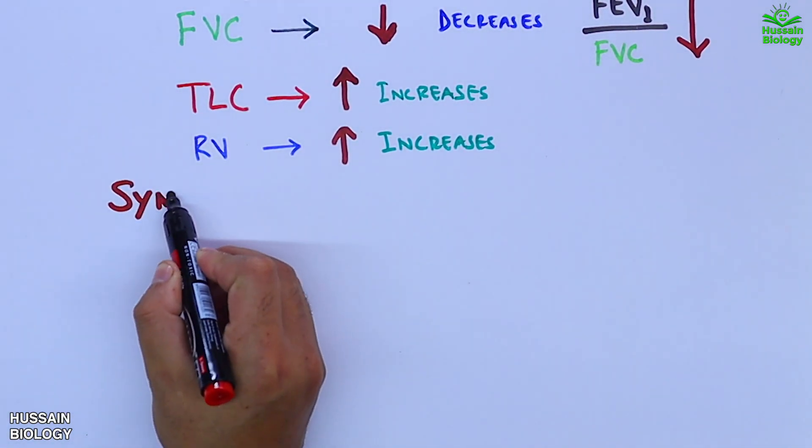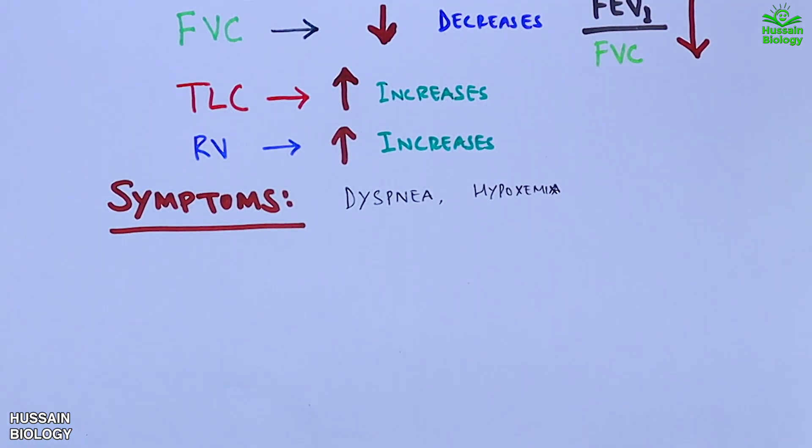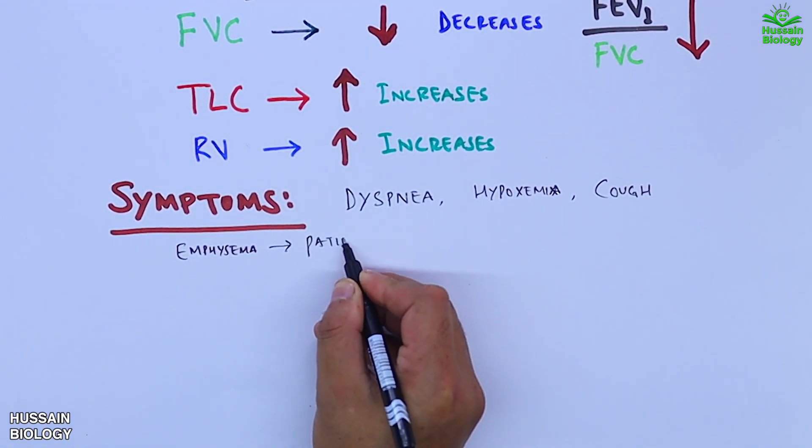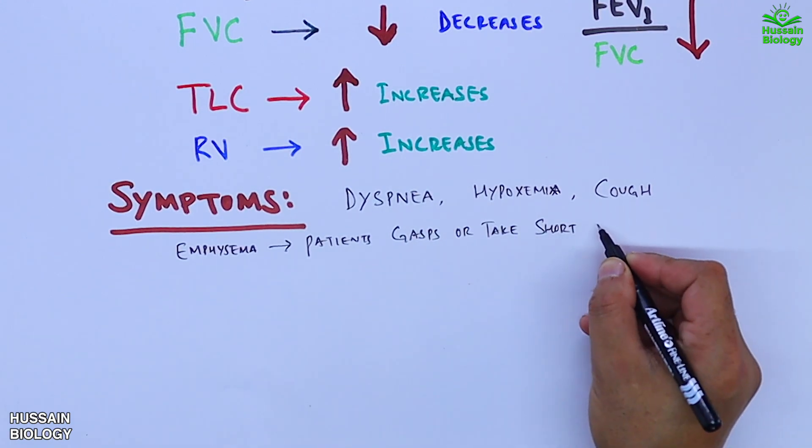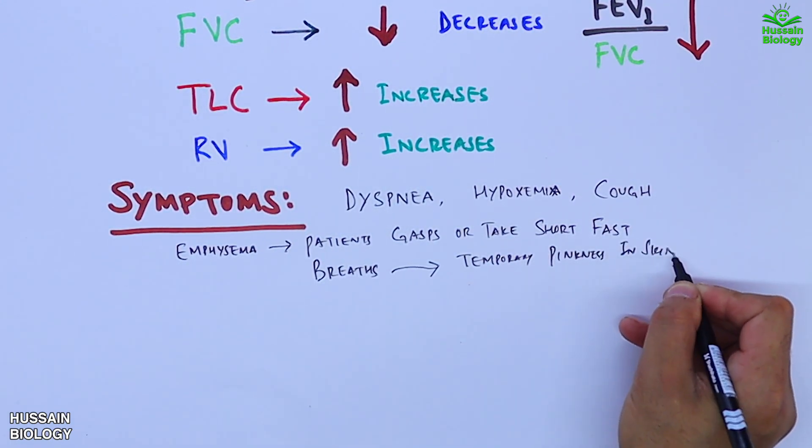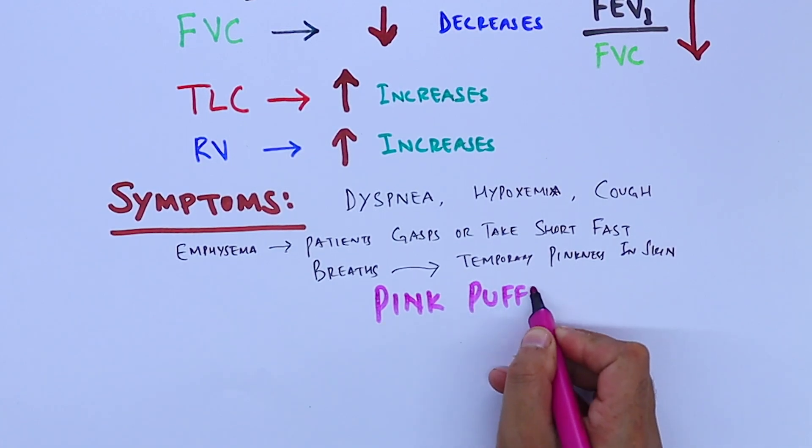The symptoms in amphysema include dyspnea, hypoxemia, and cough. Sometimes amphysema is also termed pink puffers because patients gasp or take short, fast breaths which leads to temporary pinkness in the skin, thus called pink puffers.